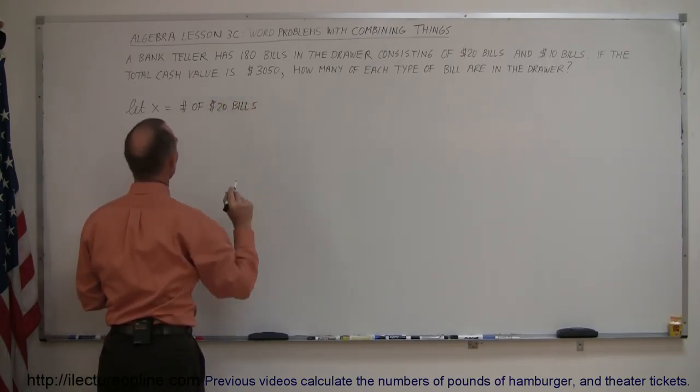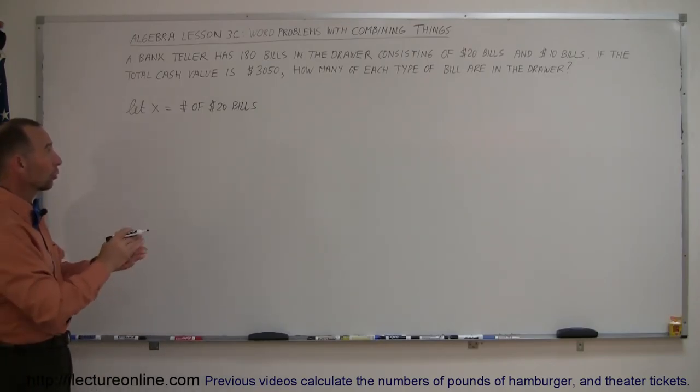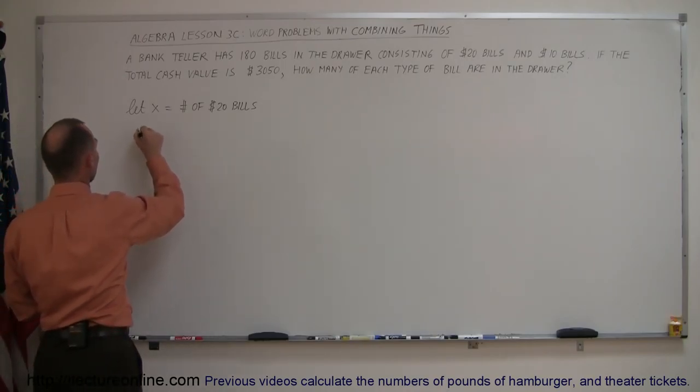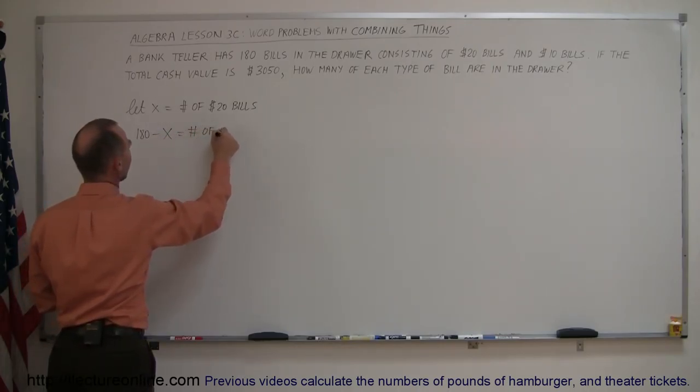Then how do we express the number of $10 bills? Well, we're told there's a total of 180 bills, so the total minus x will be the number of $10 bills. So 180, that's the total, minus the number of bills that are x, that are $20 bills, equals the number of $10 bills.